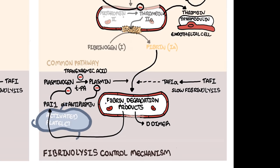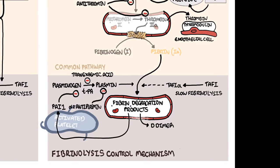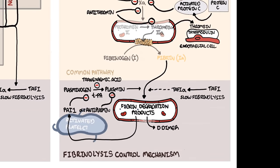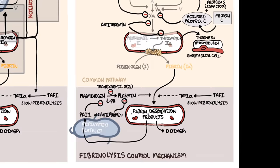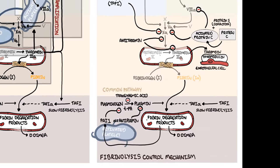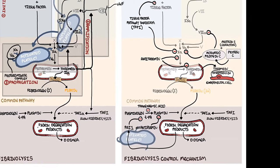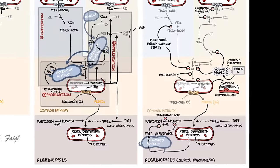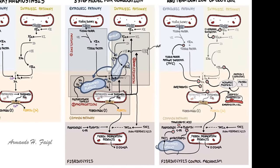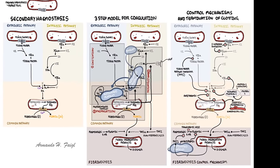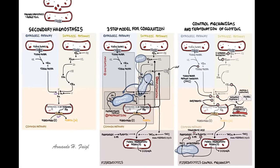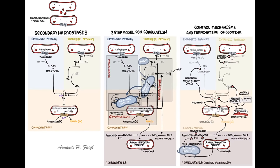In summary, we discussed the classical coagulation cascade, which includes the intrinsic and extrinsic pathways. We also learned about the cell-based model, which includes initiation, amplification, and propagation. Finally, we covered the control mechanisms of the coagulation cascade as well as the control mechanisms of fibrinolysis.